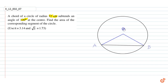Now, if we draw the perpendicular from the center O on chord AB, what we know is that it meets the middle point of chord AB. This middle point is point D.